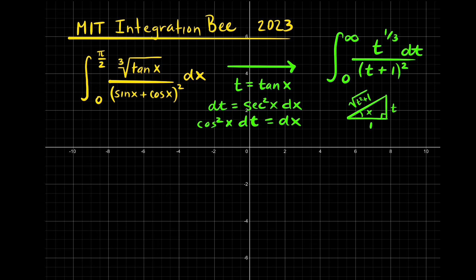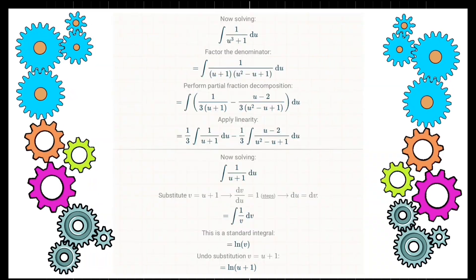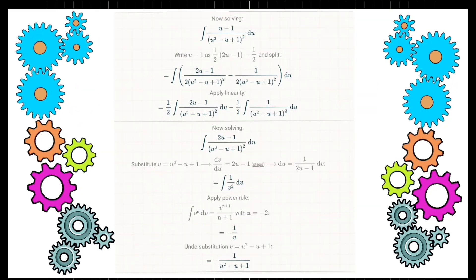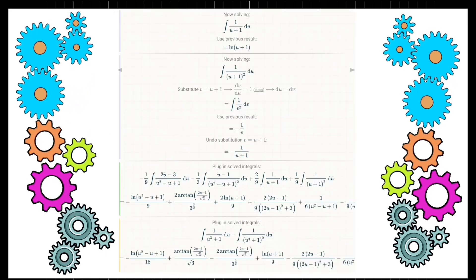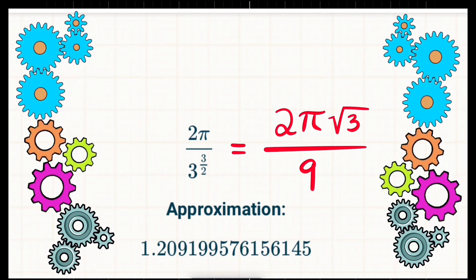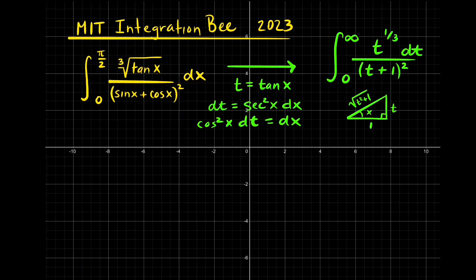This integral required many, many substitutions and involved many, many integrals. Here's the short version: 2 pi square root of 3 all over 9. But in 4 minutes, that's not the way we're going to do it. So we're going to employ the use of complex numbers.